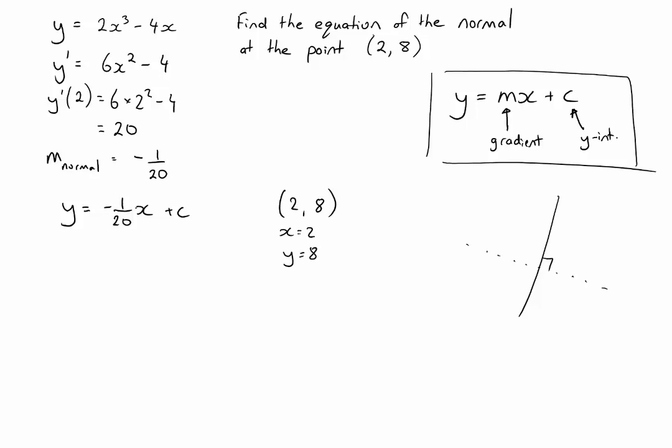If we substitute those two values into our equation, the only thing we have left is c. So I'll put in y as 8. We have negative 1/20 times 2 plus c. Working through this, that's negative 2/20ths plus c.